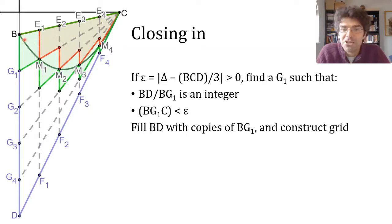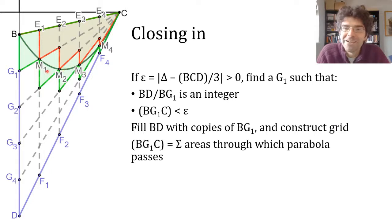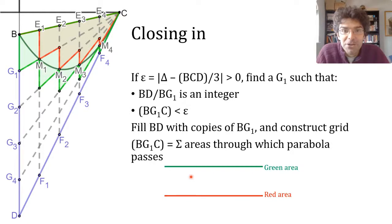And we can shift which elements they are, and that shows that the triangle has the same area as the set of grid elements through which the parabola passes. And now we have that the green area is bigger than the red area. The difference of those two areas, which is the set of grid elements through which the parabola passes, is the area of triangle BG1C.